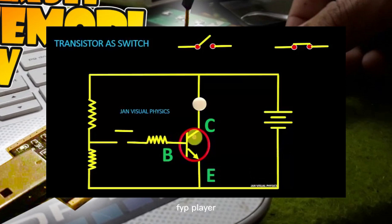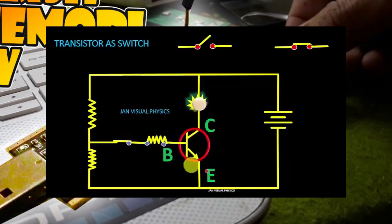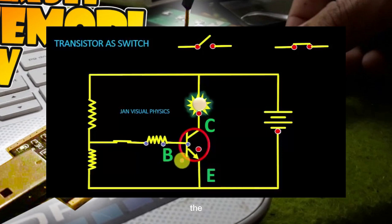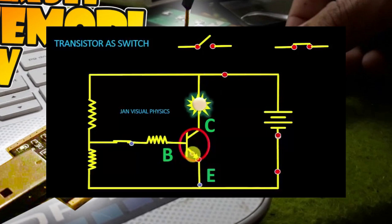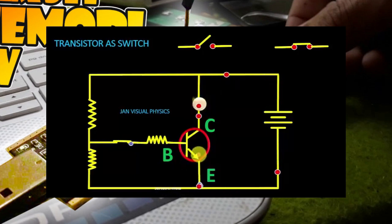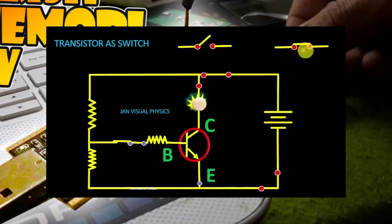If we apply a positive signal at the base of the transistor, the emitter-base junction will become forward biased and the transistor will conduct. In this state, the transistor behaves like an on switch.